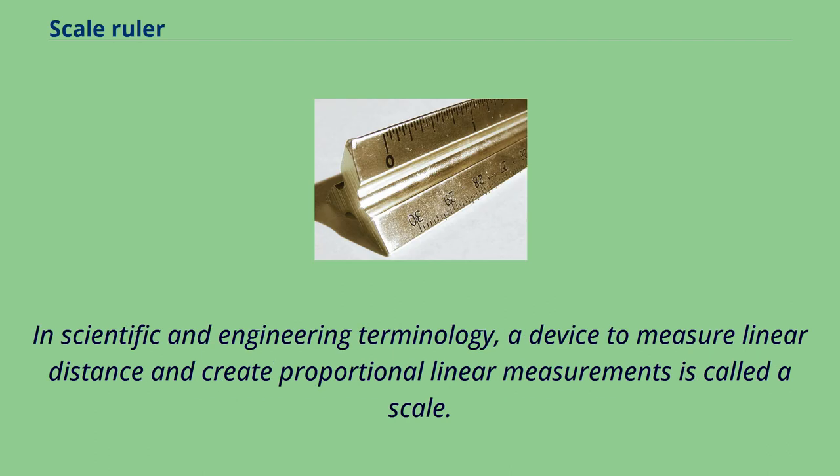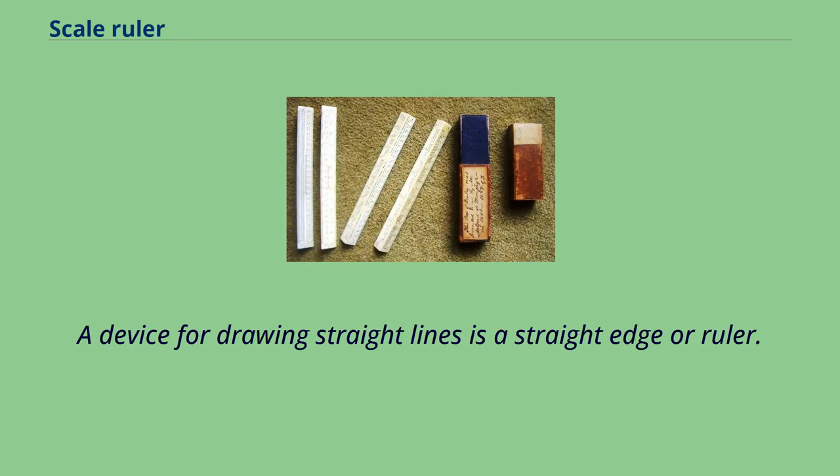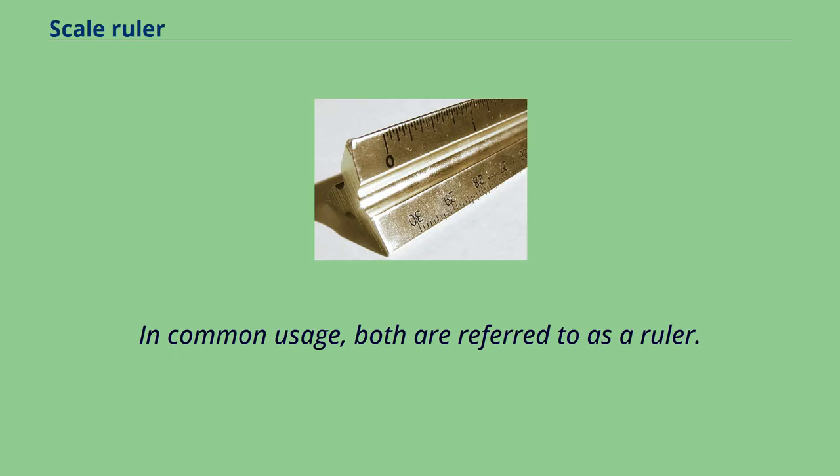In scientific and engineering terminology, a device to measure linear distance and create proportional linear measurements is called a scale. A device for drawing straight lines is a straight edge or ruler. In common usage, both are referred to as a ruler.